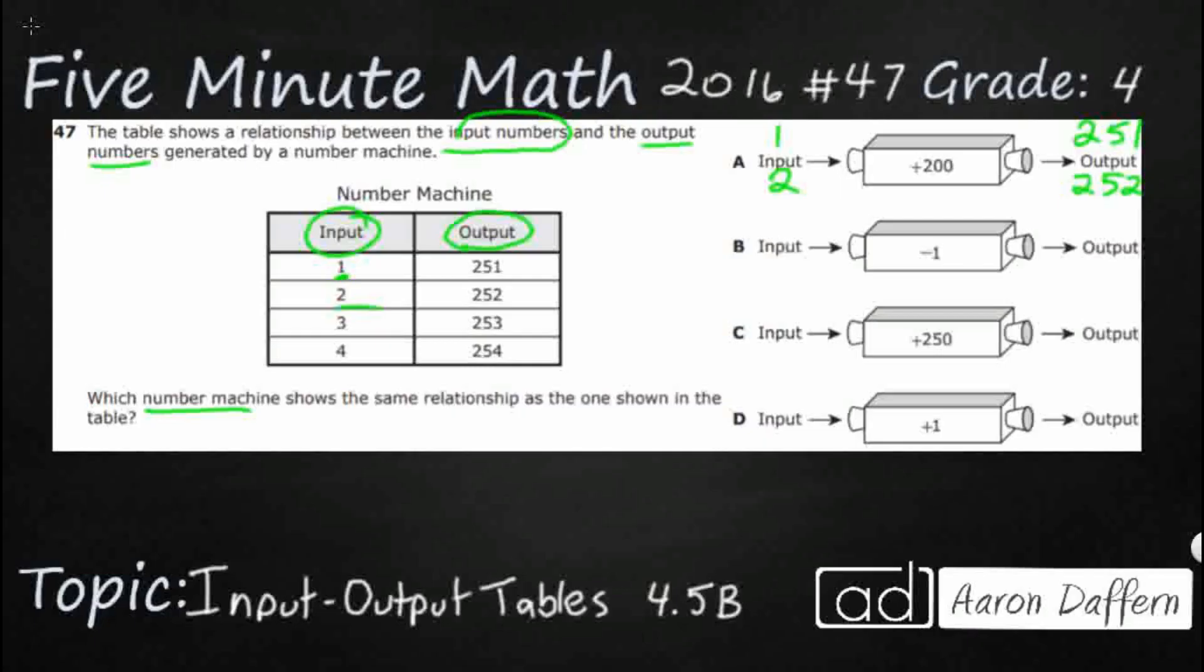So, let's try it. Let's do 1 plus 200, and most of us can do that mentally, but if not, we can go ahead and line it up like this. That's going to be 201. We're looking for 251. So, let's just double check to make sure that our 200, it's not going to work with the second one either. That's 202.